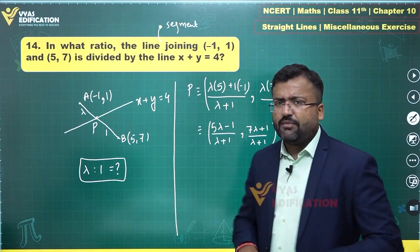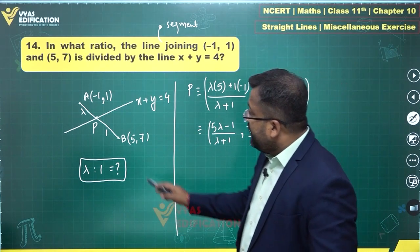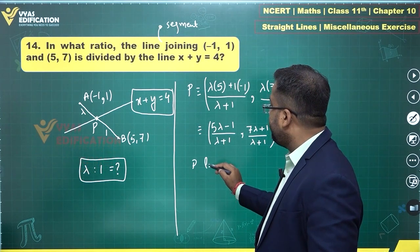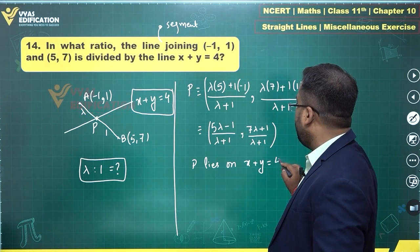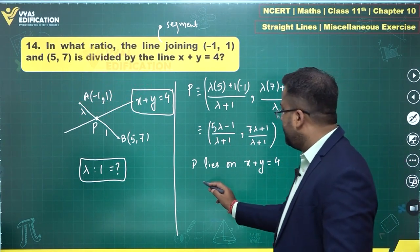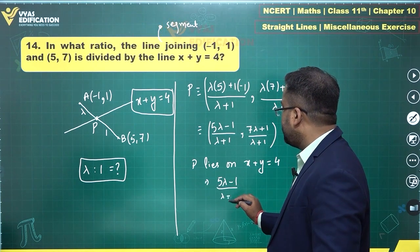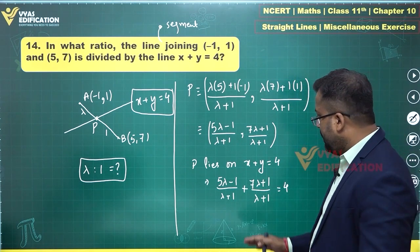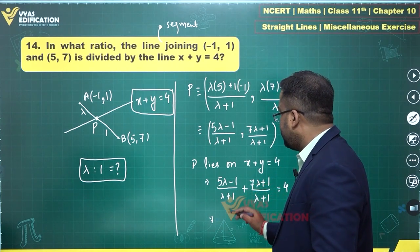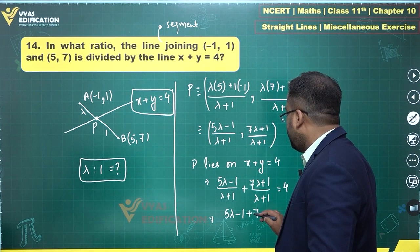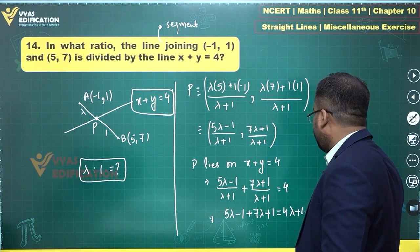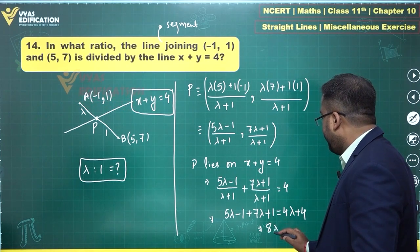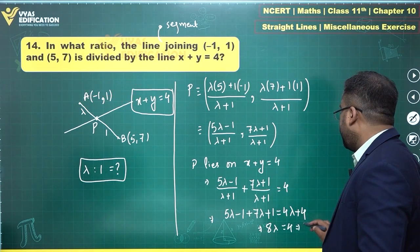Once we find P, we observe that this point P lies on the line x plus y equals 4. So the coordinates satisfy this condition. Substituting: (5 lambda minus 1) upon (lambda plus 1) plus (7 lambda plus 1) upon (lambda plus 1) equals 4. Multiplying through by (lambda plus 1): 5 lambda minus 1 plus 7 lambda plus 1 equals 4 lambda plus 4, giving 12 lambda equals 4 lambda plus 4, so 8 lambda equals 4.